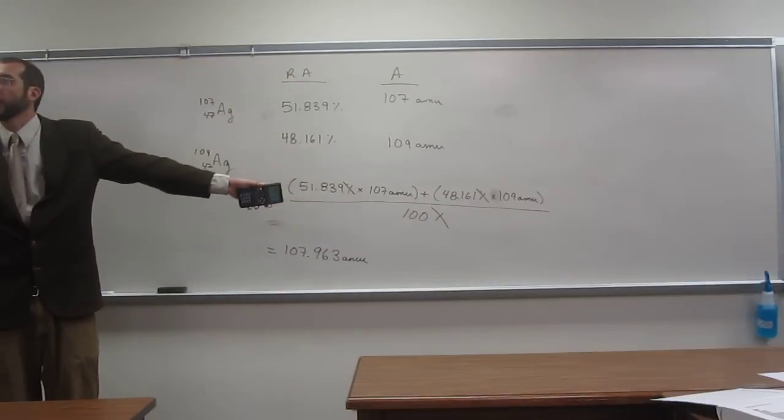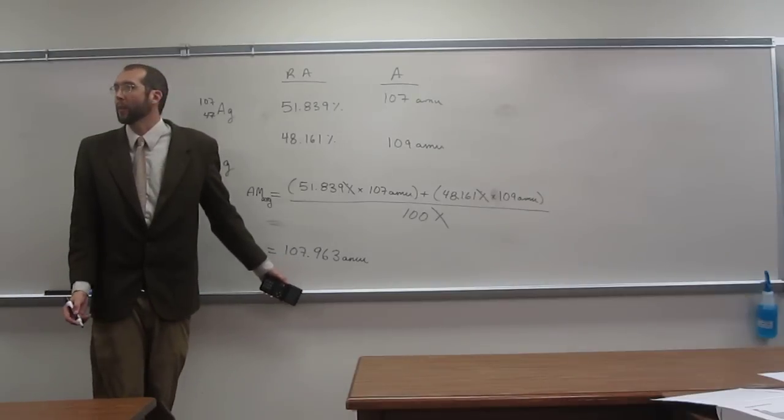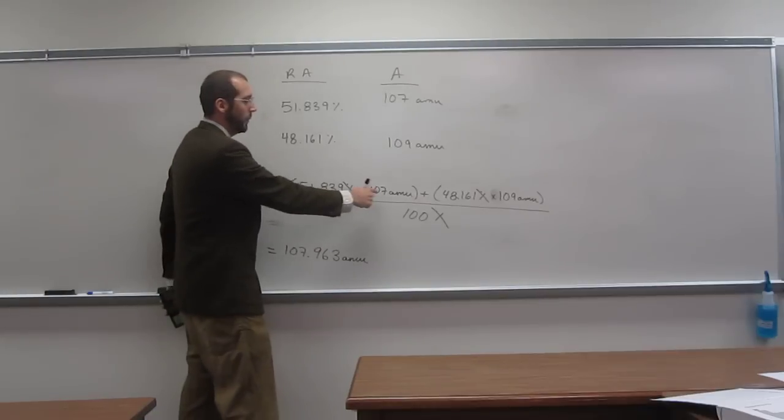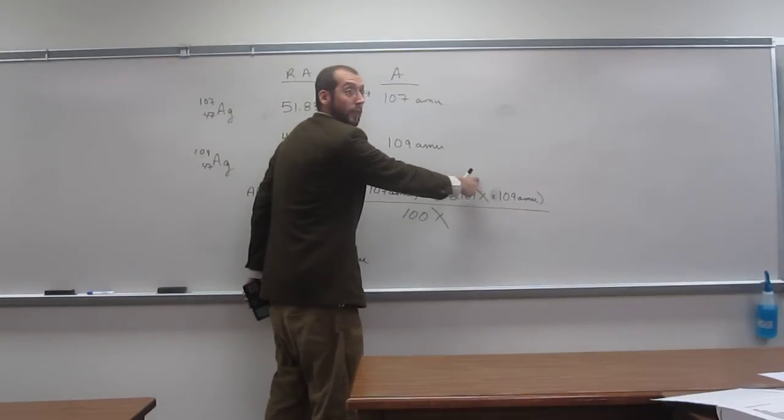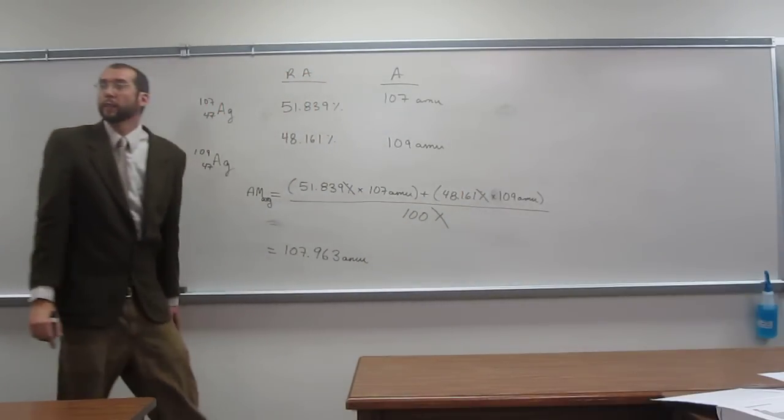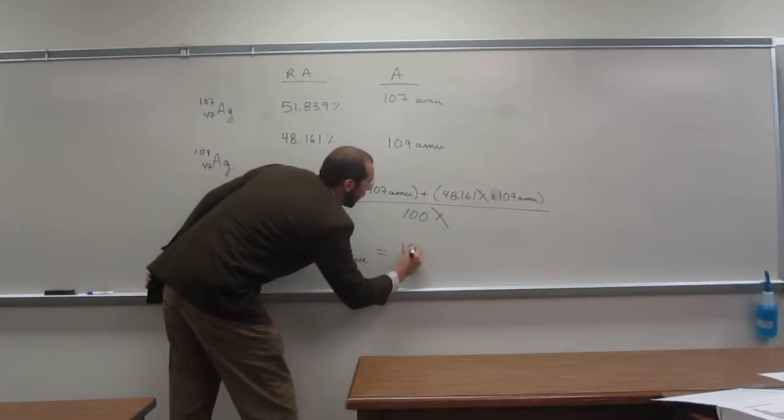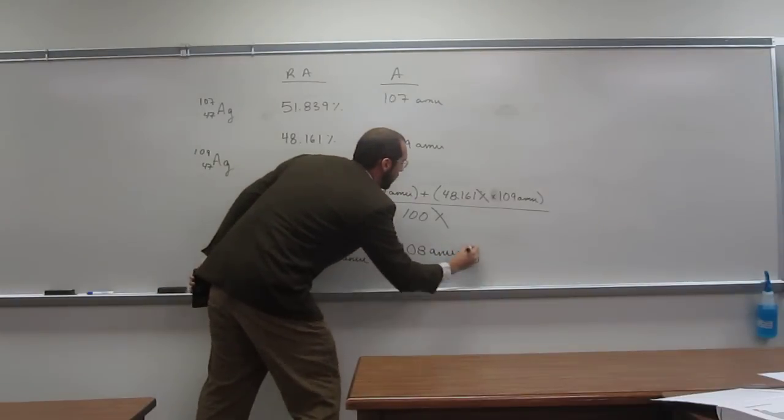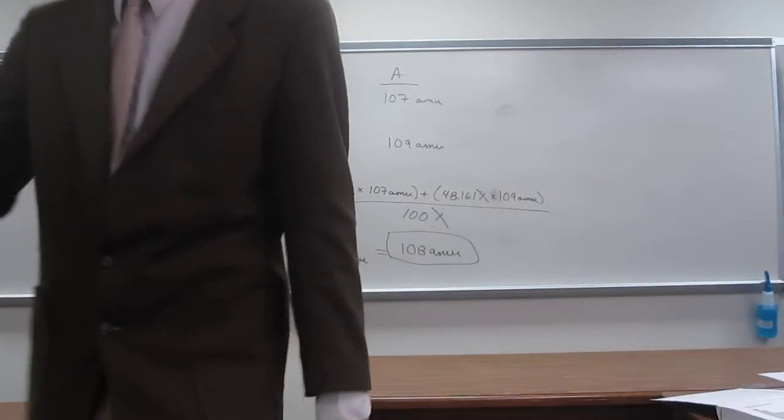So our units are amu. And then we've got to cut this down to three sig figs. Is everybody cool with that too? Why? Because we're multiplying here. This has to go to three sig figs. This has to go to three sig figs. This is an actual exact number, so we don't have to worry about the sig figs there. So when we take this to three sig figs, 108 amu. So that's the average atomic mass of silver given in this particular one.